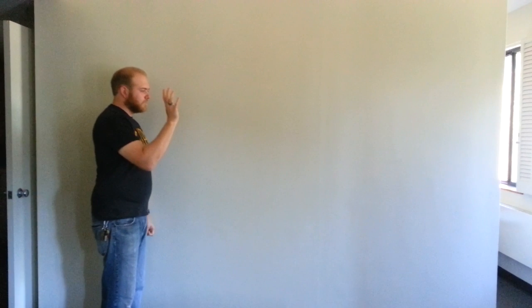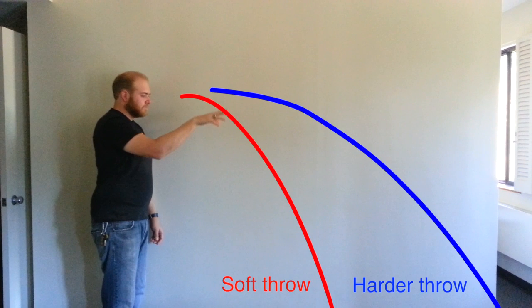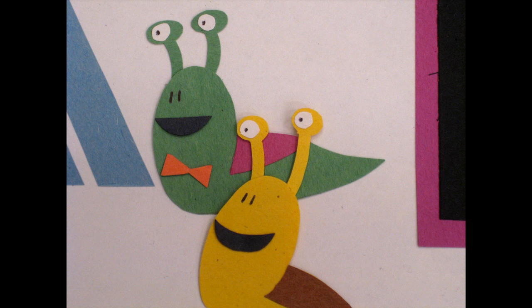When you throw the ball, it travels in a parabolic arc and curves downward until it hits the ground. If you throw the ball harder, it travels farther, but still curves in a parabolic arc. Now let's zoom way out and scale things up.